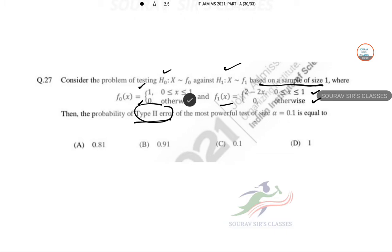For the most powerful test, power of a test is 1 minus type 2 error. So this we have to work on.